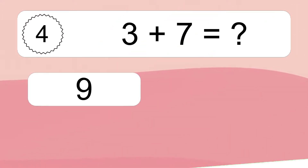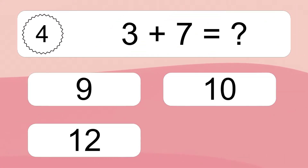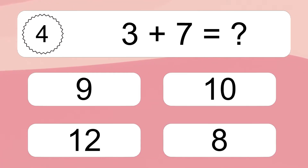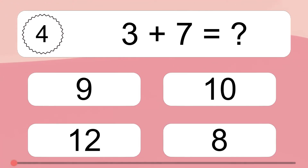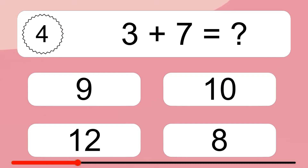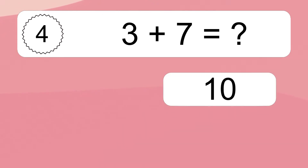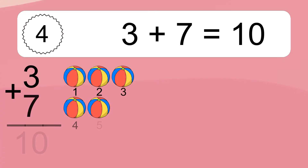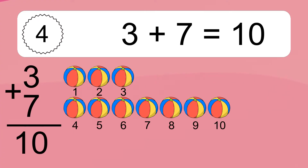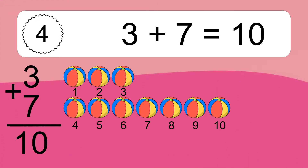3 plus 7 equals what? 3 plus 7 equals 10. Let's count it.